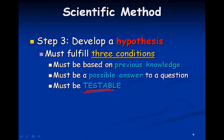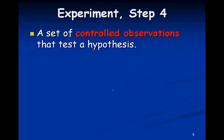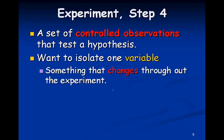After we develop a hypothesis, we're going to test that hypothesis with an experiment. An experiment is a set of controlled observations that tests a hypothesis. We want to isolate one variable, a single variable. And a variable is something that changes throughout the experiment.